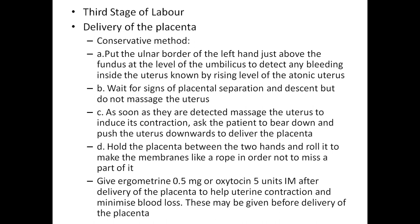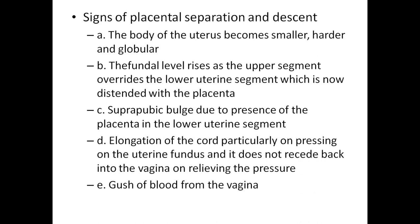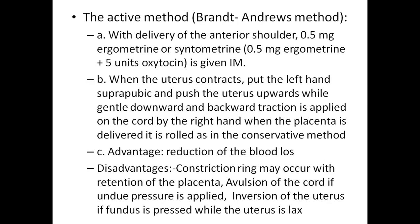Hold the placenta between two hands and roll it to make membranes like a rope in order not to miss any part. Give ergometrine 0.25–0.5 mg or oxytocin 5 units IM after delivery of the placenta to help uterine contraction and minimise blood loss. Signs of placenta separation include: the body of the uterus becomes smaller, harder and globular; the fundal level rises as the upper segment overrides the lower uterine segment, which is now distended with the placenta — causing a big bulge; elongation of the cord, particularly on pressing on the uterine fundus, and it does not recede back into the vagina when pressure is relieved; and a gush of blood from the vagina.